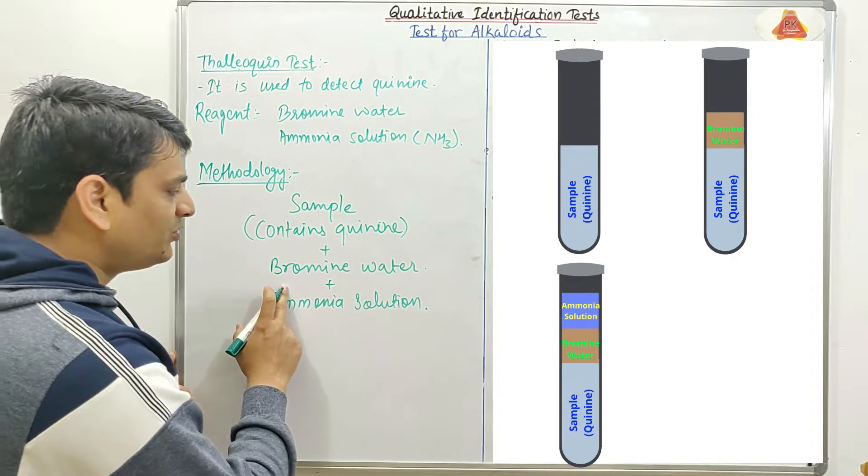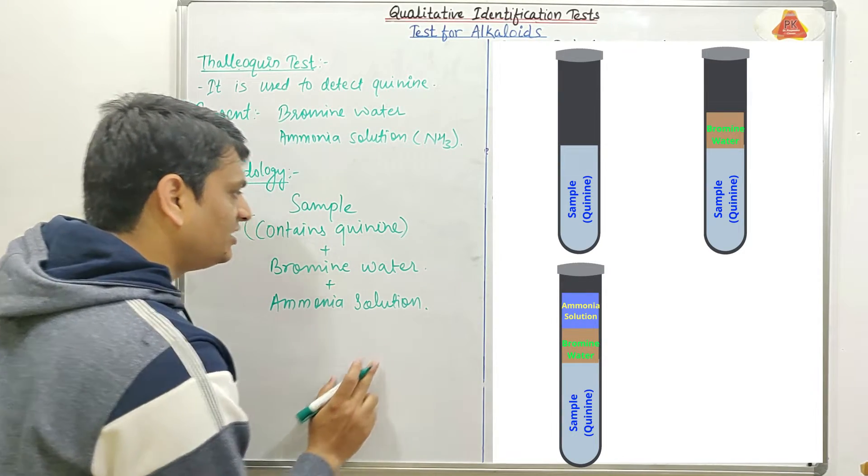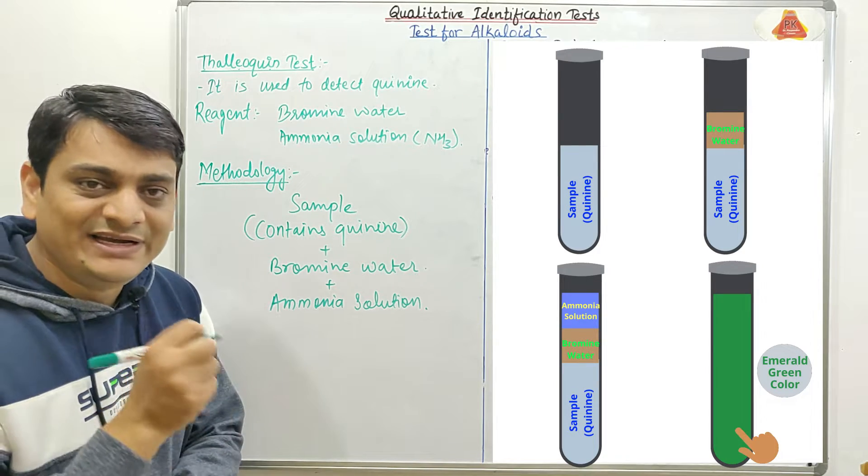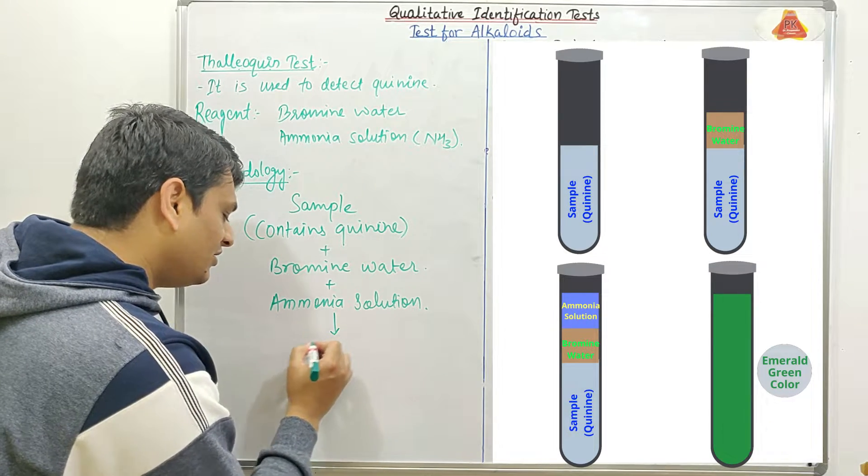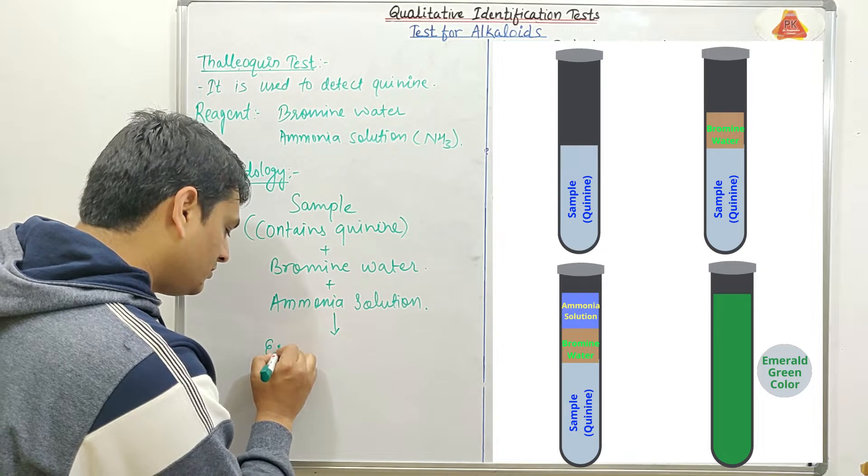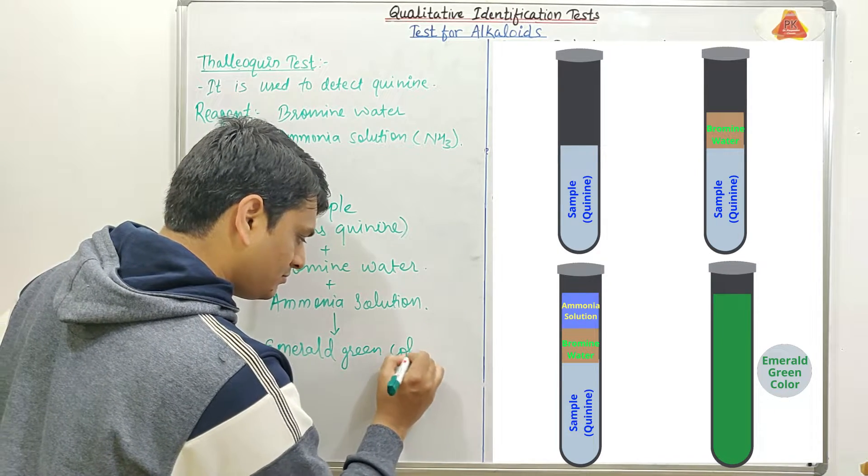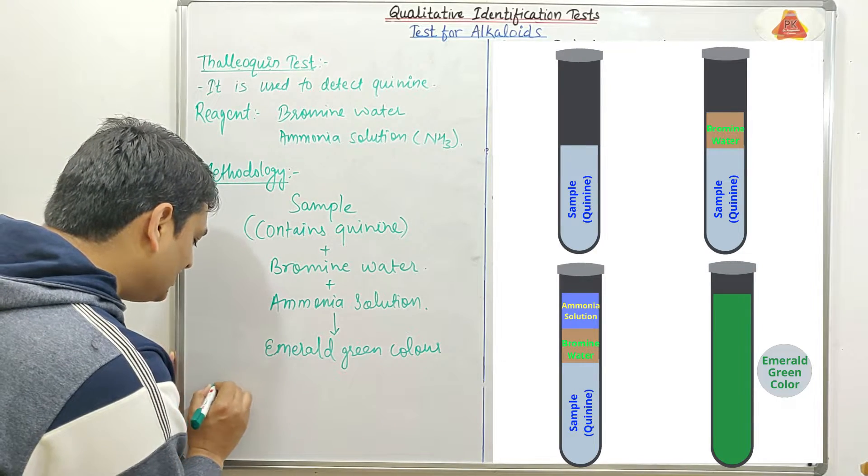After addition of Bromine water and Ammonia solution, if we get Emerald green color, that means quinine is present in our sample.